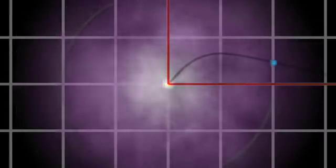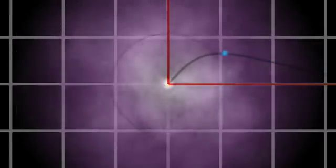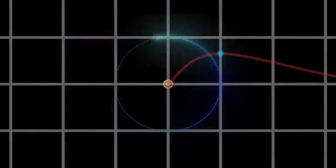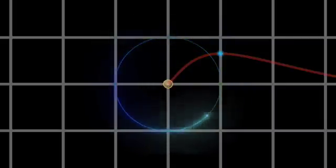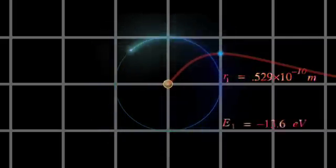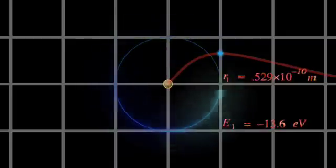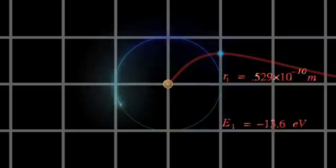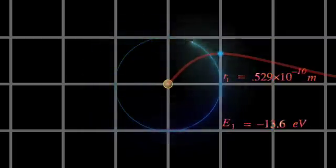Amazingly, the radius where the probability reaches a maximum is precisely equal to the radius of the first allowed orbit of Niels Bohr's model of the hydrogen atom. And its energy is exactly equal to the energy of an electron in this orbit in the Bohr atom.